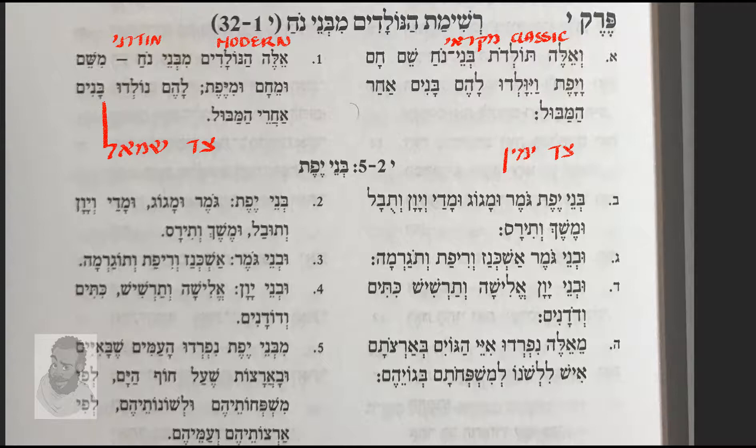Shalom, shalom, lecholchem. This is a reading from Perech Yod of Bereshis, starting from Pasuk Aleph. I'll be going through the genealogy of Yefeth — that's Tolezoth Yefeth — which is the list of who's born from the sons of Noah: Reshimath Hanoladzim Mi Bene Noah.